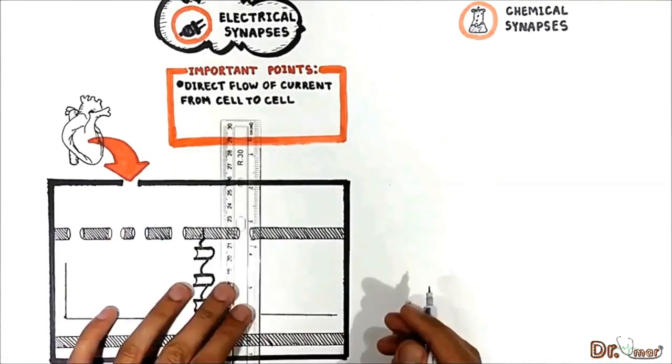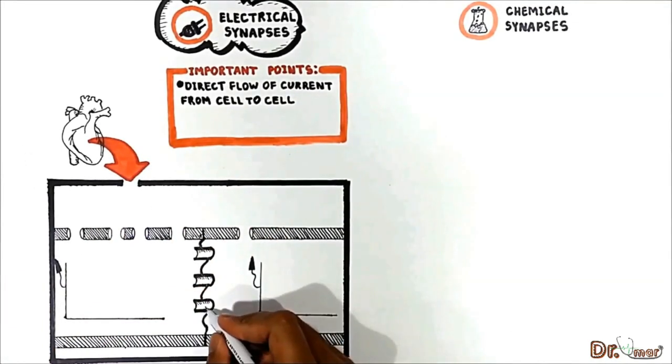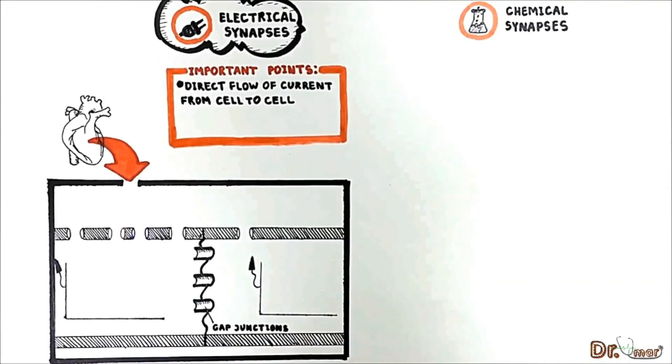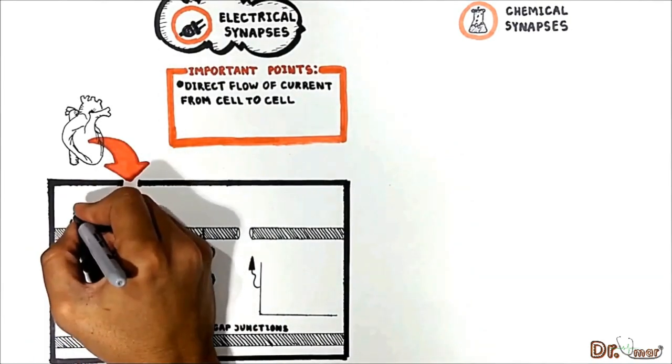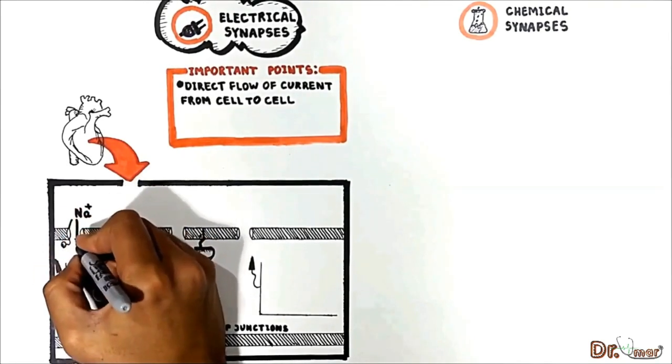It is important to note that between the cardiac cells we have these special electrical windows which are called gap junctions that are always open. You already know that an action potential in a first cell starts with sodium influx.